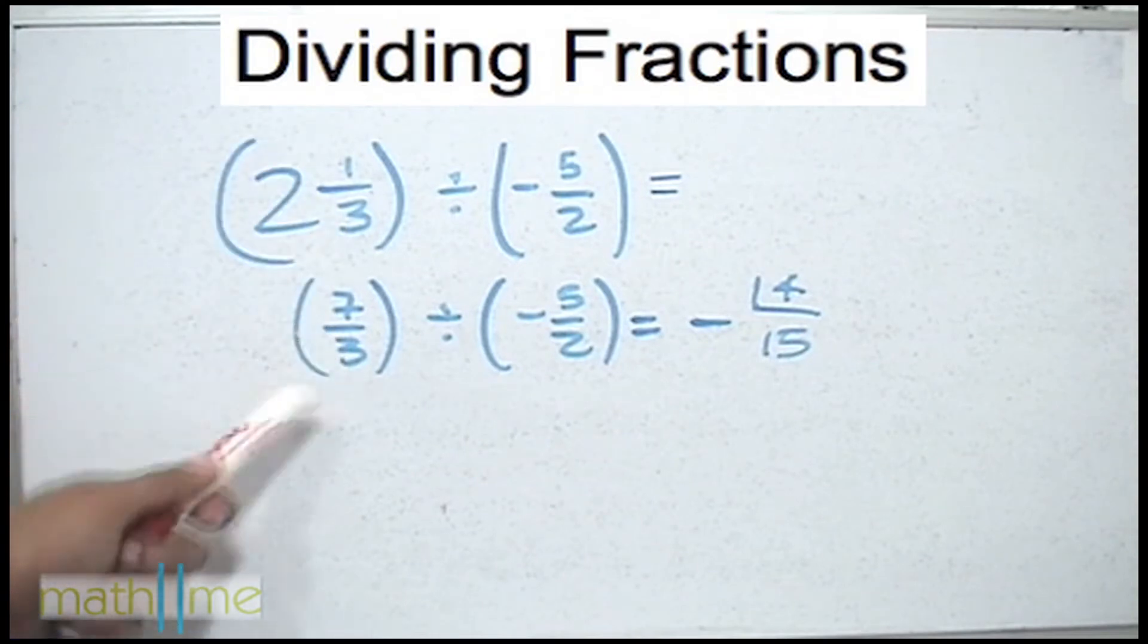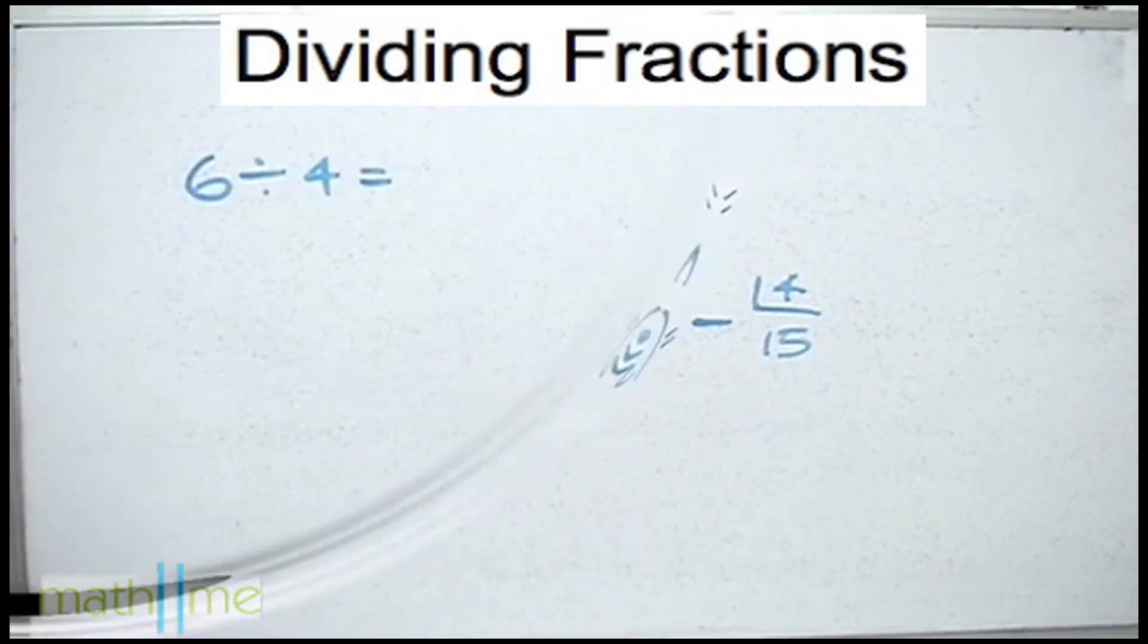Summarizing, first we convert it into a mixed number then into an improper fraction, then we multiply using the cross method.